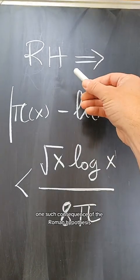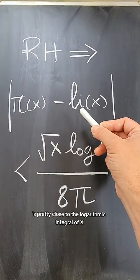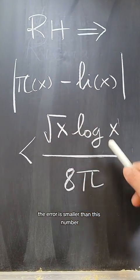For example, one such consequence of the Riemann hypothesis is that the usual prime counting function is pretty close to the logarithmic integral of x. The error is smaller than this number.